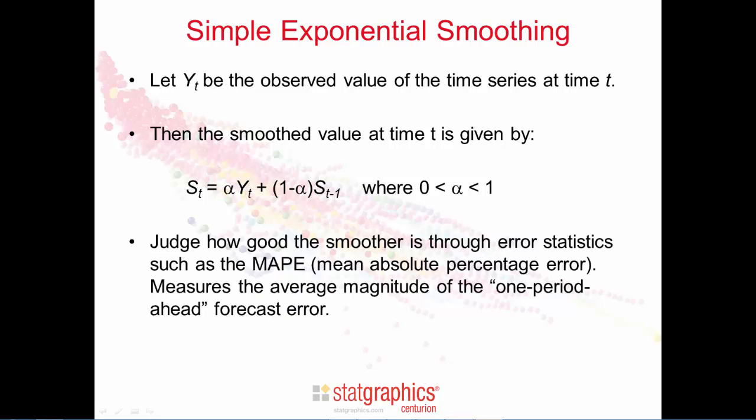In order to judge how well a smoother performs, error statistics are calculated. One of the common error statistics is called the MAPE, the mean absolute percentage error. This statistic measures the average magnitude of the one period ahead forecast errors. Those are the errors trying to predict one period ahead given all information at a particular point in time.